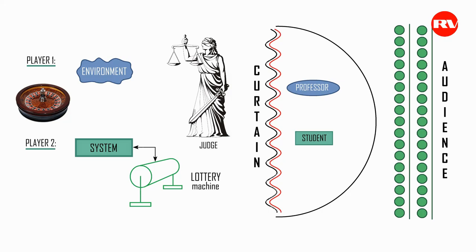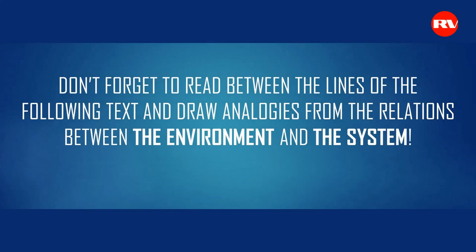We will explore an informational process on the example of prior-knowing intellectless elements and strictly determined algorithms, that is, strictly determined rules. In this game, we initially proceed from the fact that the player environment and the player system do not possess intellect on their own. But as a result of certain manipulations and actions, it will turn out that they possess intellect. Do not forget to read between the lines and draw analogies from the relations between the environment and the system.